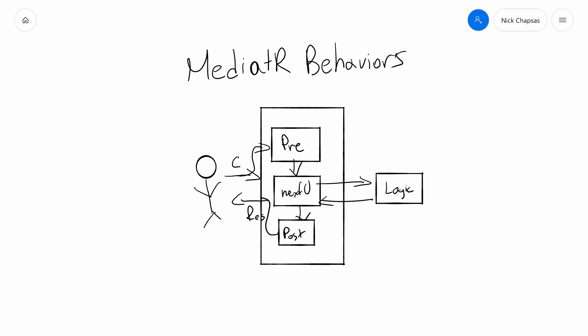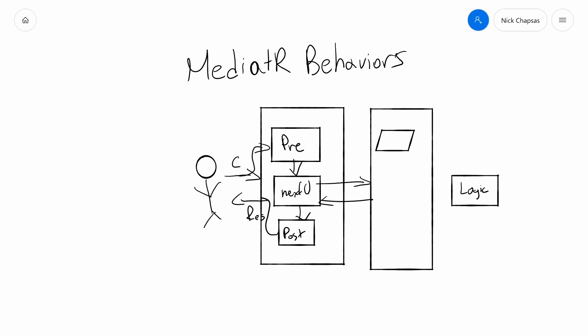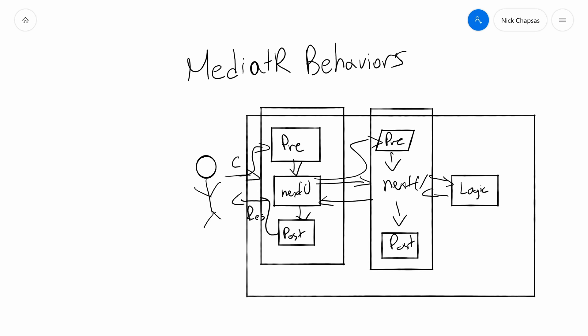The cool thing about this is that you could take the logic and move it back and add another layer with the same structure — pre, next, and post. You can again have things go to the pre, call the next, go to the post. This whole block represents the pipeline. And this pipeline essentially is a bunch of layers that allow us to do different things on different levels.